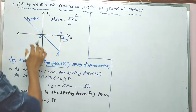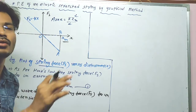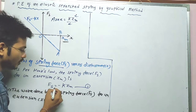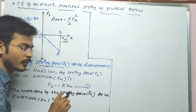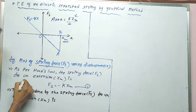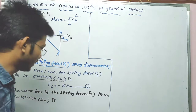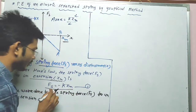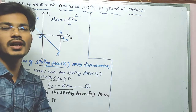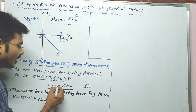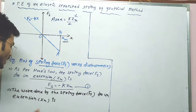At maximum displacement xm, the spring force Fs depends on Hooke's law. According to Hooke's law, Fs is equal to minus k into xm. As we already discussed, the spring force acts opposite to the displacement, and because of that reason we have written minus in the equation. So this is our equation number one.